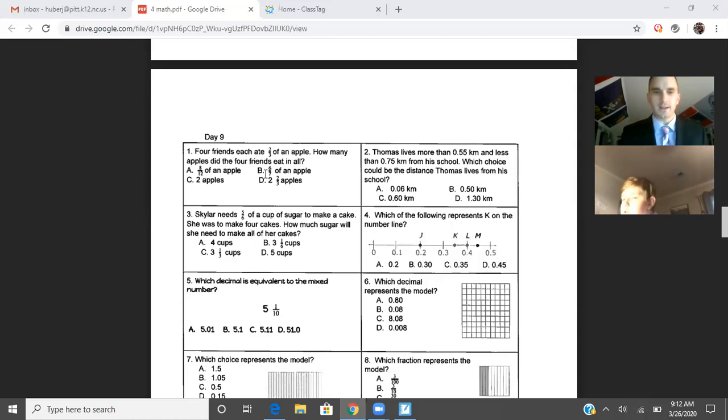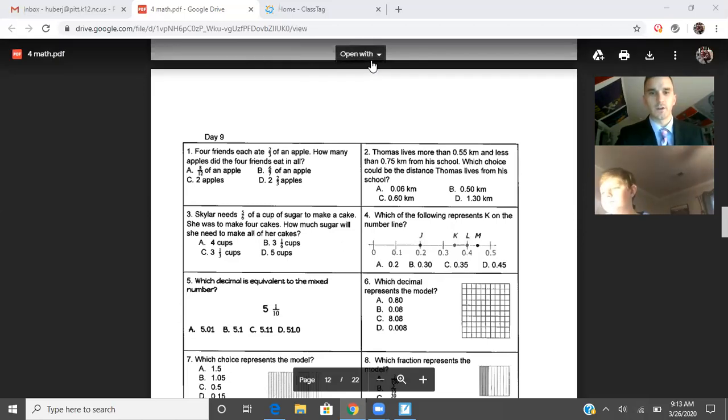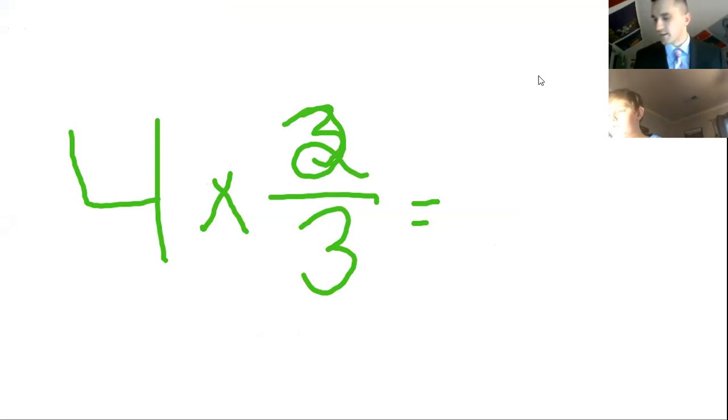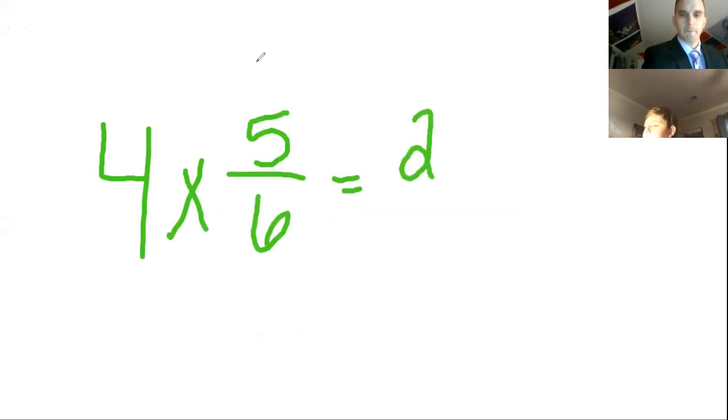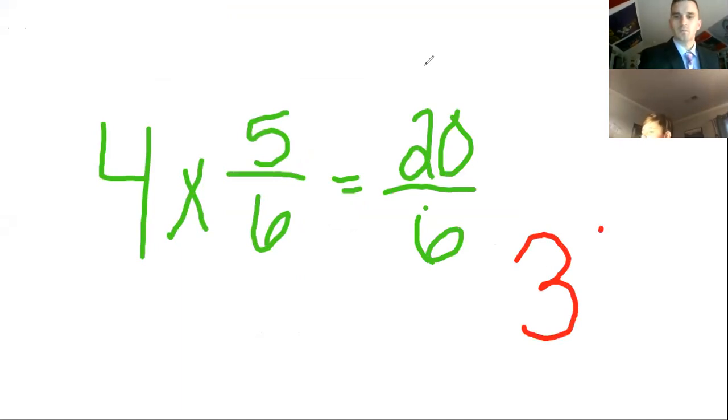Alright. Two for two. You've got one more. We're going to look at number three. When you're looking at your screen, do you see the packet on my screen right now? Yes. Okay, perfect. Alright. Skylar needs five-sixths of a cup of sugar to make a cake. She wants to make four cakes. How much sugar will she need to make all of her cakes? So, this one's very similar to number one. Walk me through this. So, you would do four times five-sixths. That will get you twenty-six. And twenty-six is an improper fraction, so you would make it a mixed number. And so, six can go into twenty-three times, and the remainder is two, and the denominator stays the same.